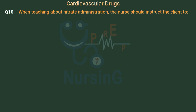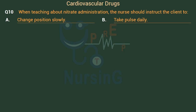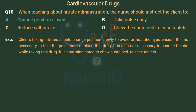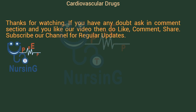When teaching about nitrate administration, the nurse should instruct the client to: Option A: Change position slowly. Option B: Take pulse daily. Option C: Reduce salt intake. Option D: Chew the sustained-release tablets. The right answer is Option A: Change position slowly. Clients taking nitrates should change position slowly to avoid orthostatic hypotension. It is not necessary to take the pulse or change the diet while taking this drug. It is contraindicated to chew sustained-release tablets.